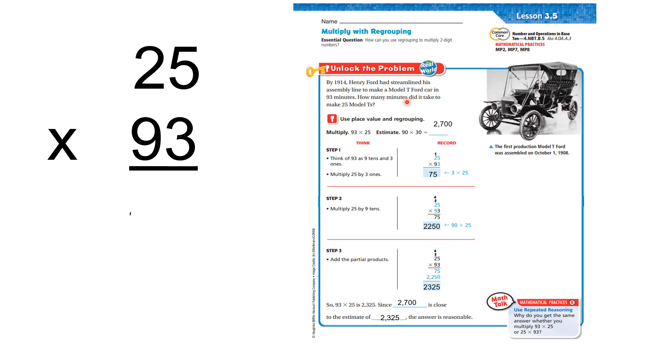Let's look at Lesson 3.5, Multiply with Regrouping. Our essential question is, how can you use regrouping to multiply two-digit numbers? Unlock the problem. By 1914, Henry Ford had streamlined his assembly line to make a Model T Ford car in 93 minutes. How many minutes did it take to make 25 Model T cars?